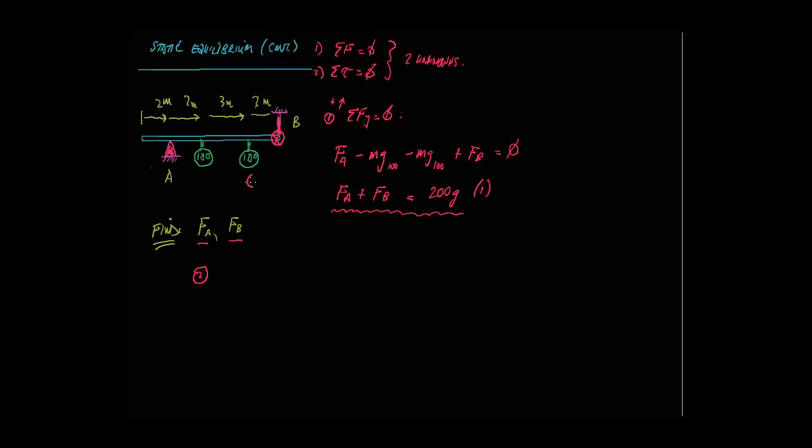So if I look at this, about that point, this 100 is going to try to rotate it counterclockwise. This 100 also counterclockwise. But this force upwards is actually trying to push it or hold it up clockwise. So when I sum the torques equal to zero, what I'm really saying is all the torques counterclockwise have to equal all the torques clockwise.